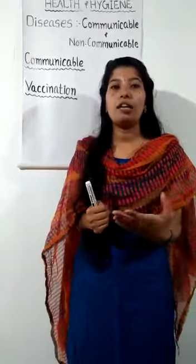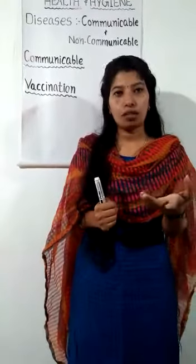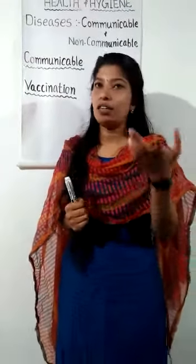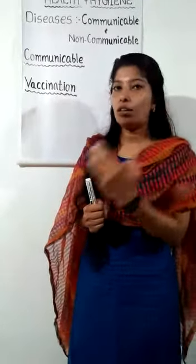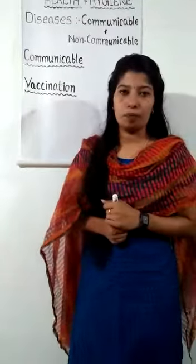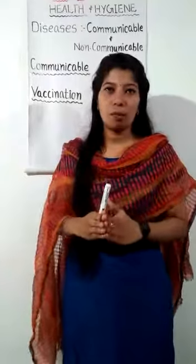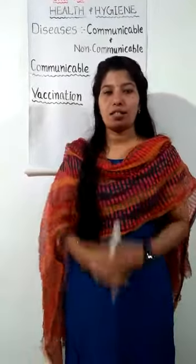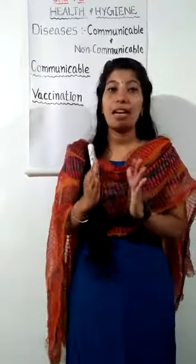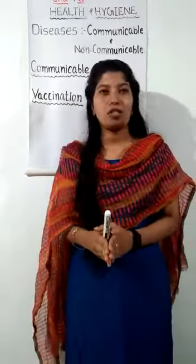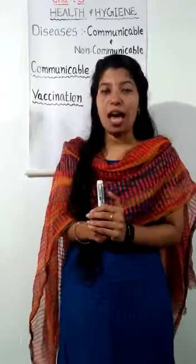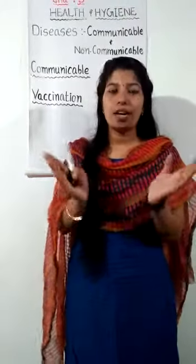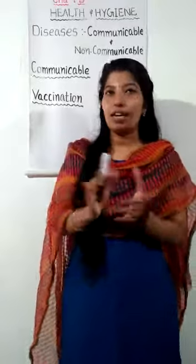In all, communicable diseases spread through air, water, food, animals, infected equipment, and touch. The first common communicable disease is malaria, which is caused by a mosquito bite. That is why it is called a communicable disease.